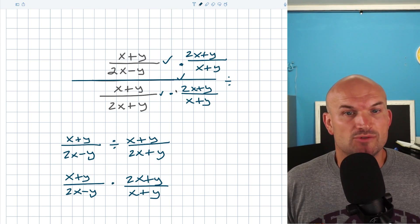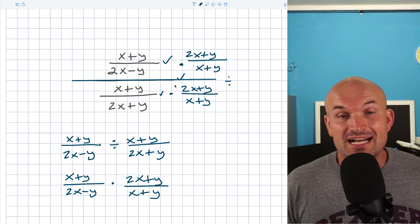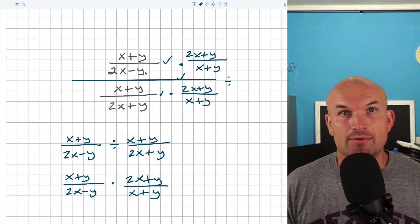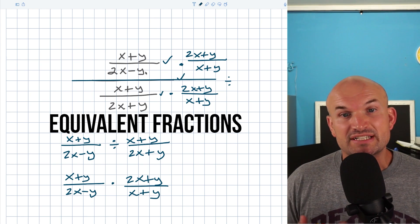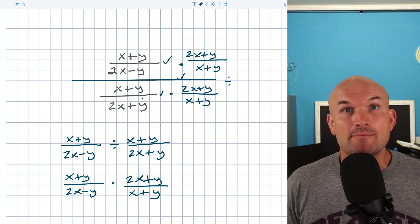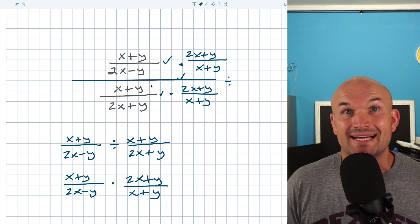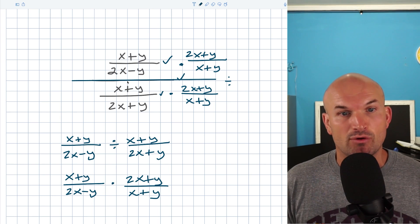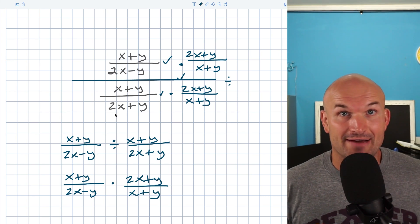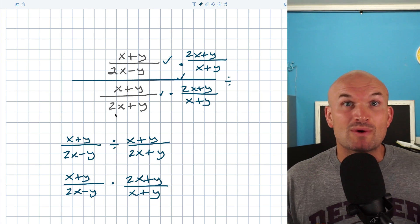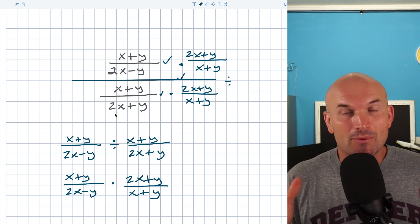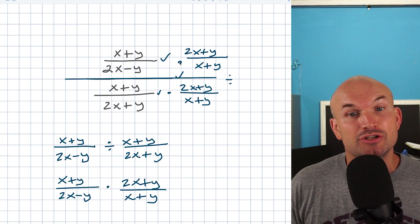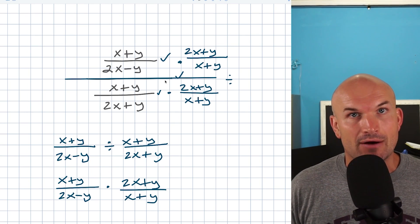The reason why I multiplied in the numerator as well as in the denominator is because we have to create what we call equivalent fractions. Whatever I multiply in the numerator I have to also multiply in the denominator to keep my fraction equivalent. We have this huge rational function we're trying to keep equivalent, so it's really important that you make sure you do that in both.